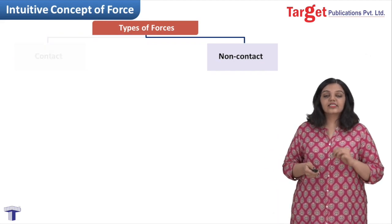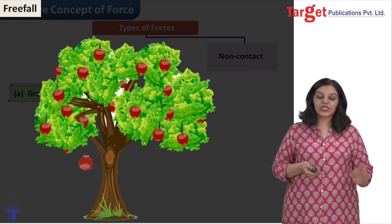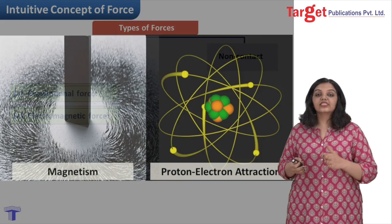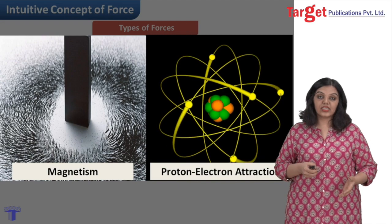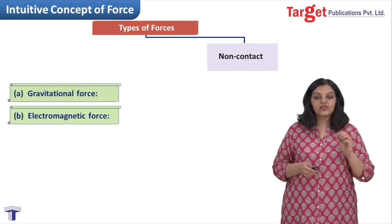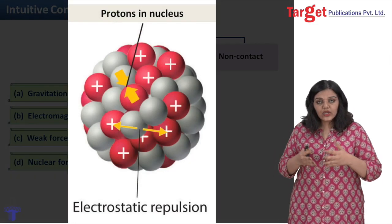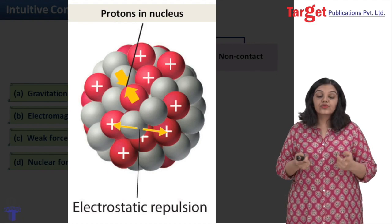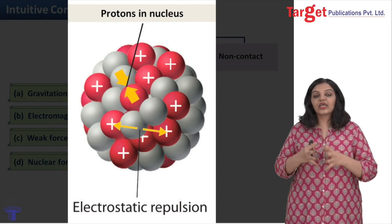Now let us look at non-contact forces. The first is the gravitational force, which attracts all objects to the center of the earth and is also responsible for keeping astronomical objects like galaxies and solar systems in place. The second is the electromagnetic force, seen in magnetism, the proton-electron attraction inside an atom, or the proton-proton repulsion inside the nucleus. The third type is the weak force, responsible for radioactive decay. Finally, the nuclear force keeps protons and neutrons inside the nucleus — even though protons are all positively charged and experience electrostatic repulsion, the nuclear force binds all nucleons together.